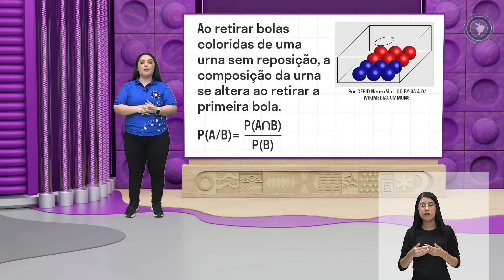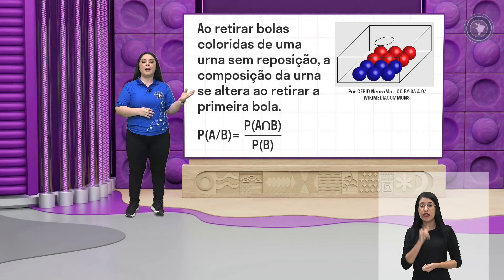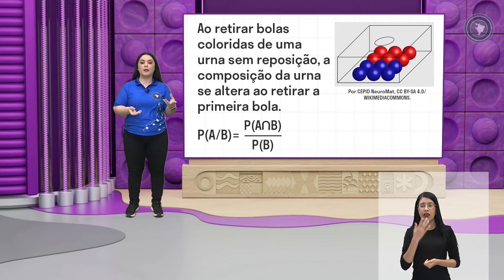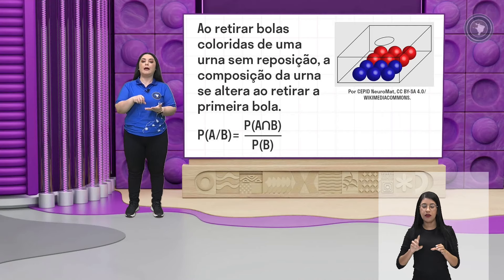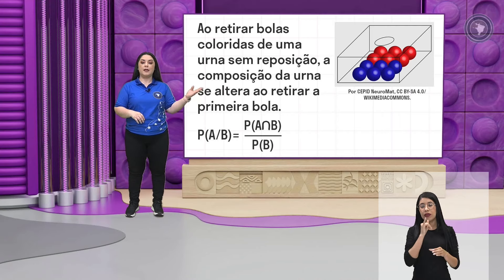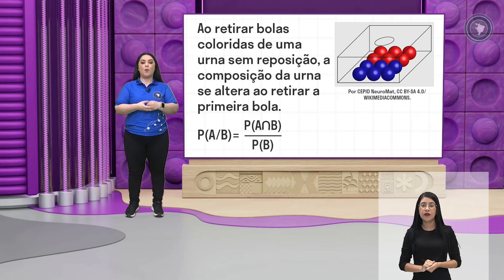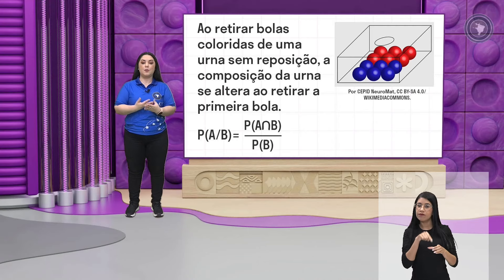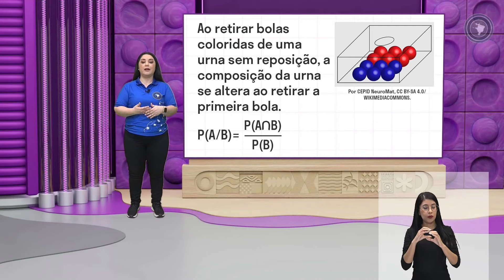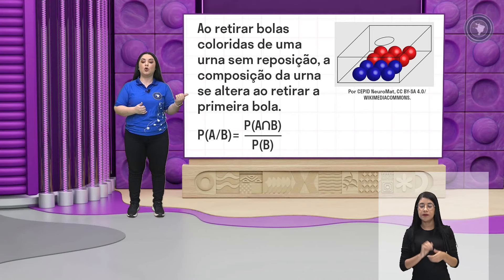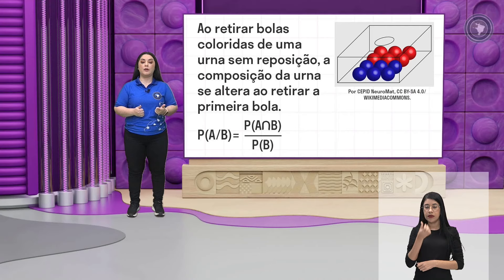Continuando, vamos verificar esse exemplo. Ao retirar bolas coloridas de uma urna sem reposição, a composição da urna vai mudar. Se eu retirar uma bola de dentro dessa urna — e vocês estão vendo que a gente tem bolas azuis e bolas vermelhas — o meu espaço amostral, ou seja, a quantidade de bolas que tem dentro da urna, vai alterar, vai diminuir. Inicialmente, eu tenho 12 bolas: 6 azuis e 6 vermelhas, como vocês podem ver na imagem.